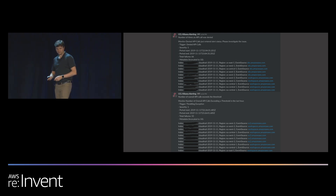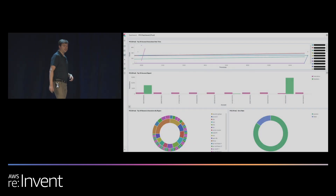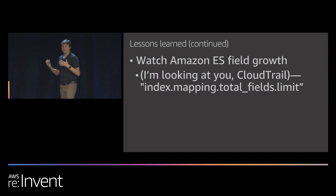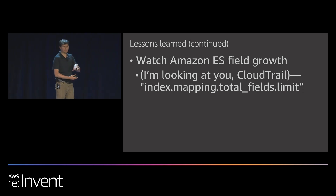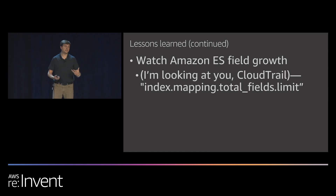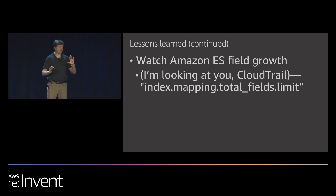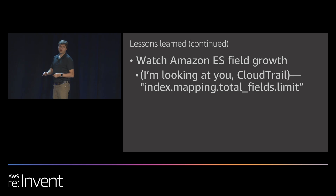Another lesson: watch your field growth. As JSON blobs get more complex, the number of fields in your documents grows. CloudTrail was the main instigator — we'd see ingestion failures because Elasticsearch hit its field limit and started rejecting documents. The solution is `index.mapping.total_fields.limit` — set this on index creation to control how deep your document field mapping can grow. We set ours to 5,000, which has been sufficient for our CloudTrail use case.